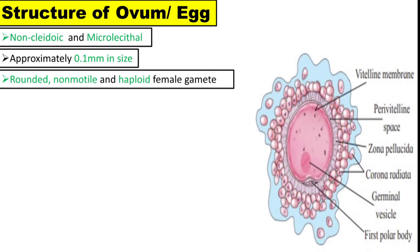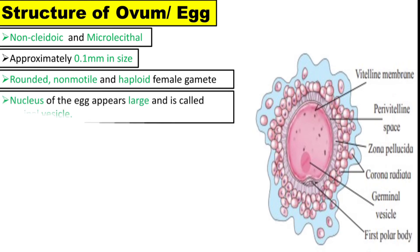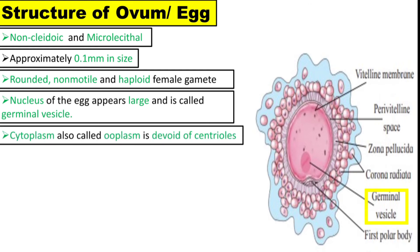The nucleus of the egg appears large and is called the germinal vesicle. A typical nucleus or pronucleus is formed at the time of fertilization. The cytoplasm of the egg is called ooplasm. It is devoid of centrioles.